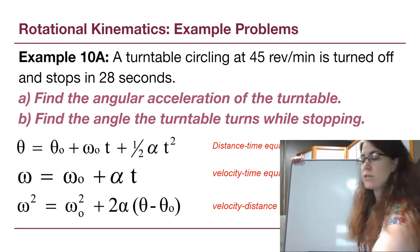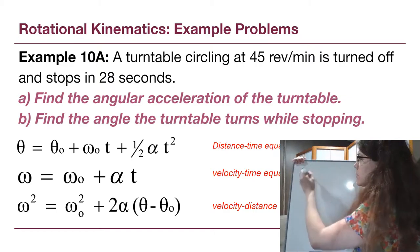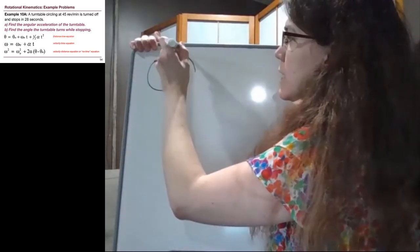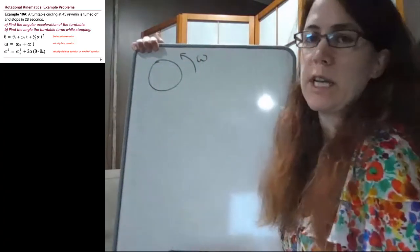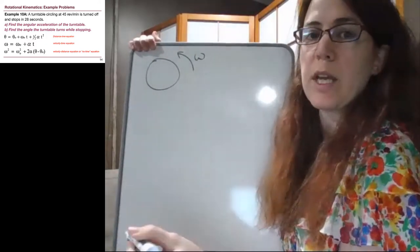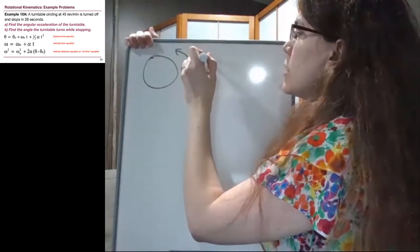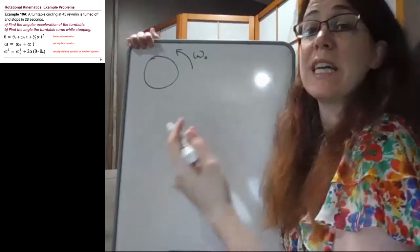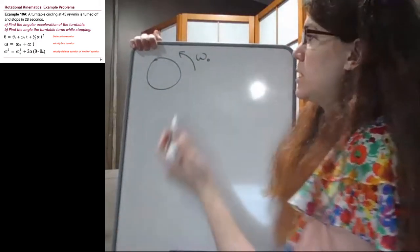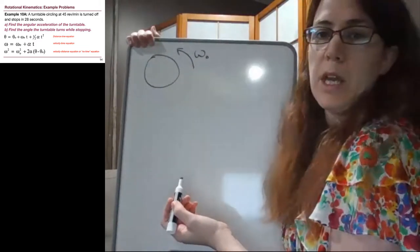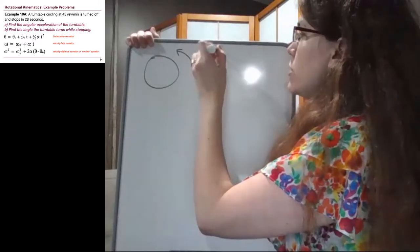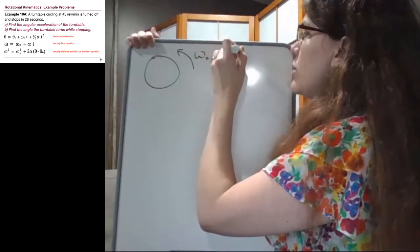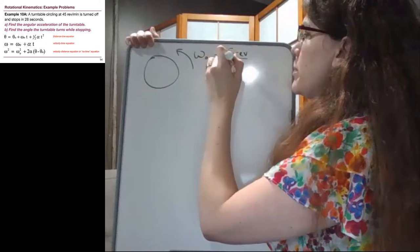So we have a turntable that is rotating, and we'll have it rotate in one direction one way or the other. Since this is the first thing we're learning about this turntable, that's the initial angular velocity, so omega 0. It's circling at 45 revolutions per minute, 45 revolutions per minute.